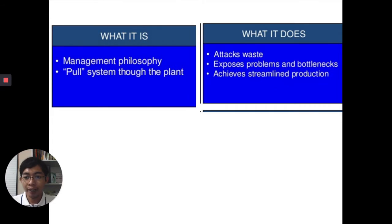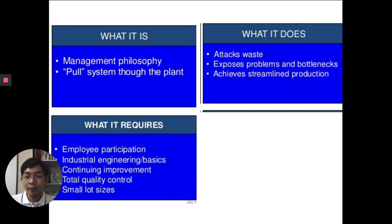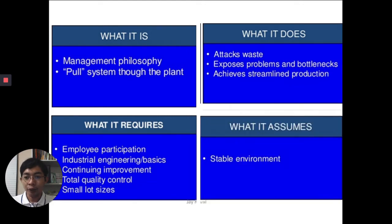What JIT does: number one, it attacks waste — waste does not add value to our firm. It exposes problems and bottlenecks in the processes, and it achieves streamlined production. What it requires: in every aspect of the JIT system, it requires employee participation and industrial engineering basics are also put into place.